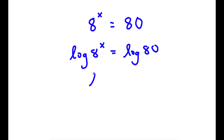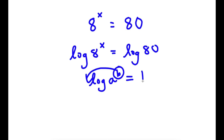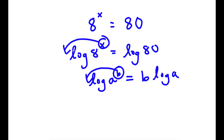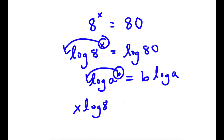Now, if I have something in the form log a to the power of b, I can move this exponent b to the front, so this can equal b times log a. So in this case, I have log a to the power of x, so I can move x to the front. So now I have x times log 8 is equal to log 80.